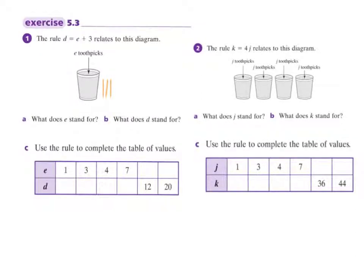Here we go with exercise 5.3. Now, these are straightforward. They might look a bit trickier with this table down here, but it's really quite easy. So what we've got is a rule: D equals E plus 3, and it relates to this diagram.